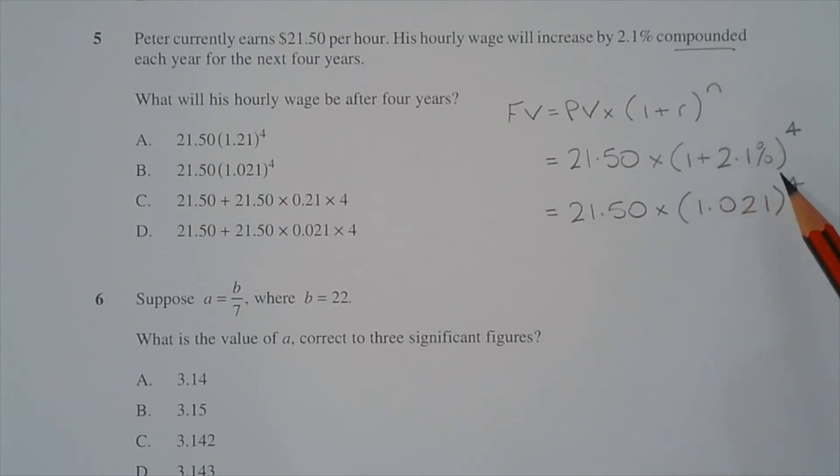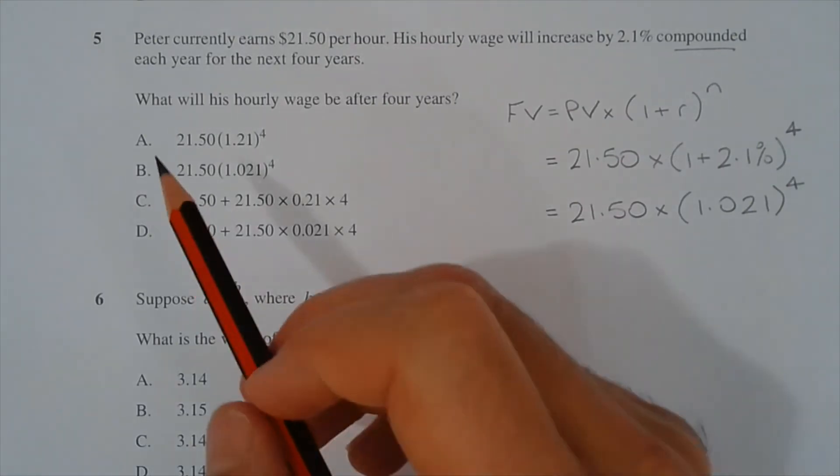And 1 plus 2.1% is equal to 1.021. So Peter's future wage, or his wage in 4 years time, is equal to $21.50 multiplied by 1.021 to the power of 4. Therefore the answer is option B.